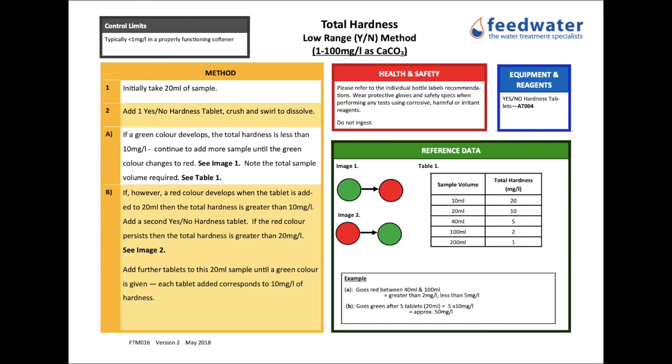The range for this method is 1 to 100 mg per litre as calcium carbonate and for a properly functioning softener results are typically less than 1 mg per litre.